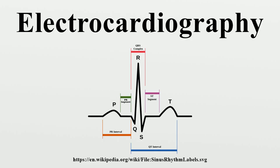A normal axis can be quickly identified if the QRS complexes in lead I and AVF are both upright. Lead I is positioned at 0 degrees and lead AVF is positioned at 90 degrees. If the QRS is upright in both, its vector of depolarization must be somewhere between these two angles, and is therefore normal axis.